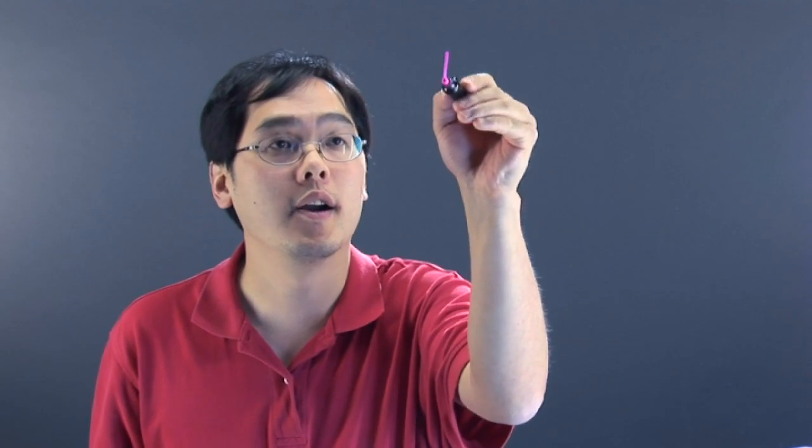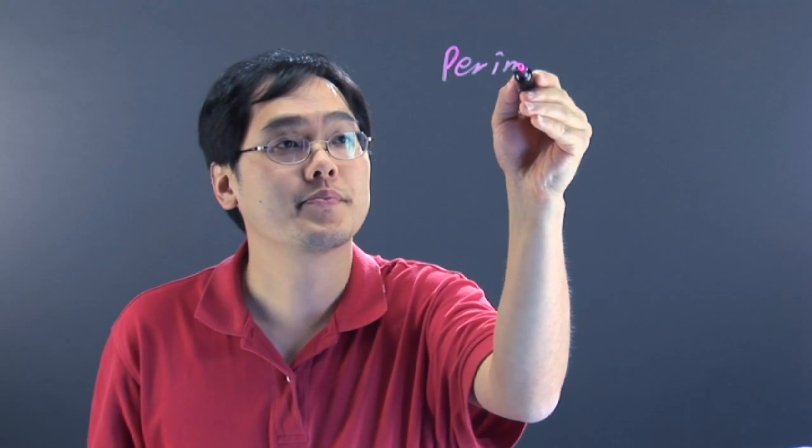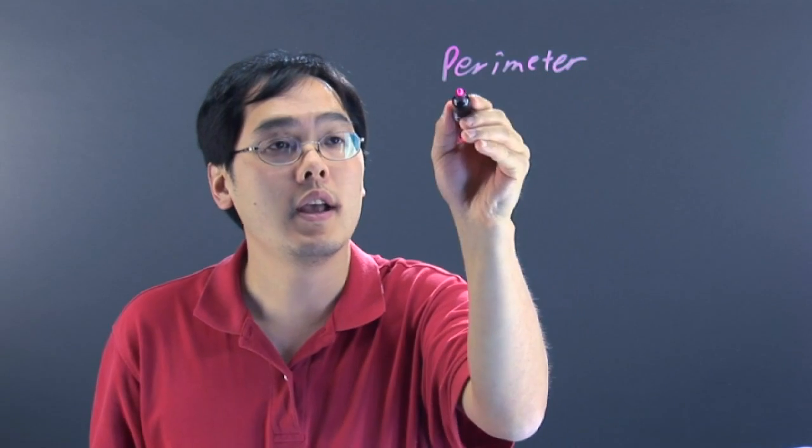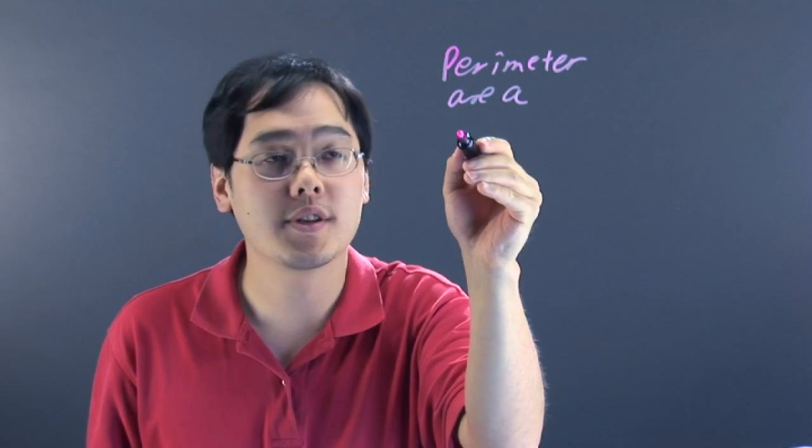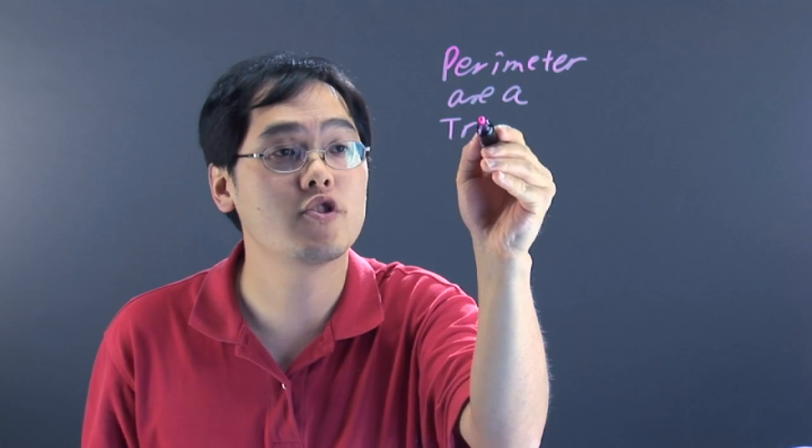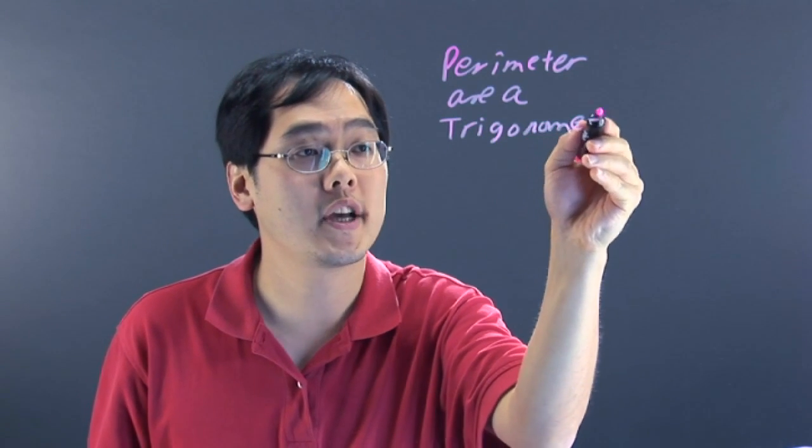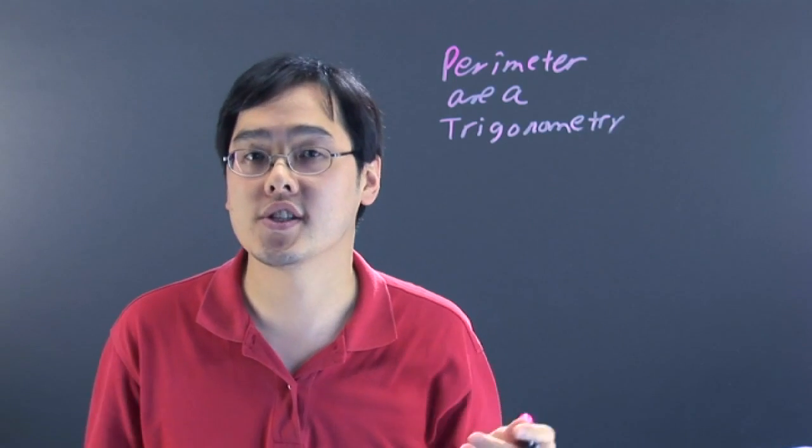Now some of the things that come to mind are perimeter, area, but also some other things to take into account - there's quite a bit of trigonometry here. So we're talking about sines, cosines, tangents, etc.